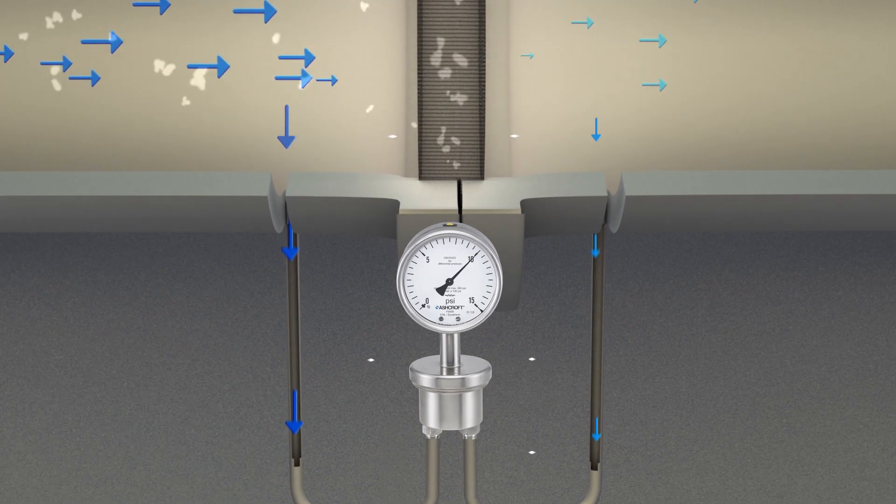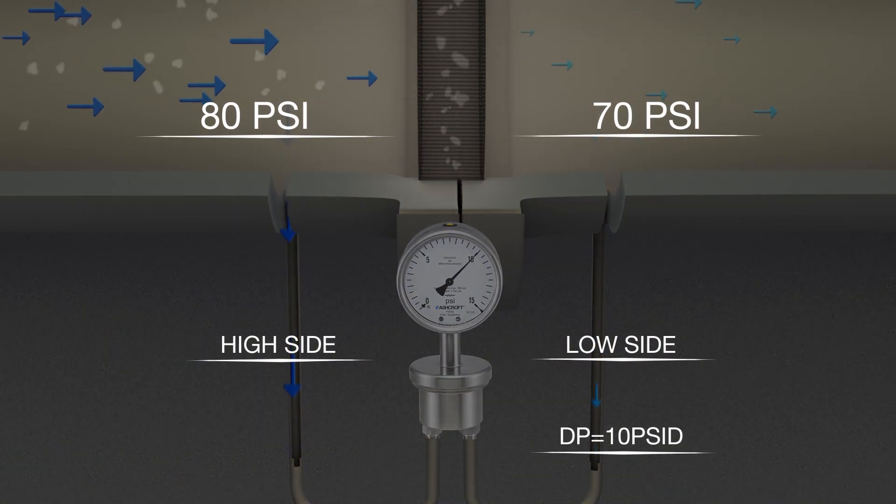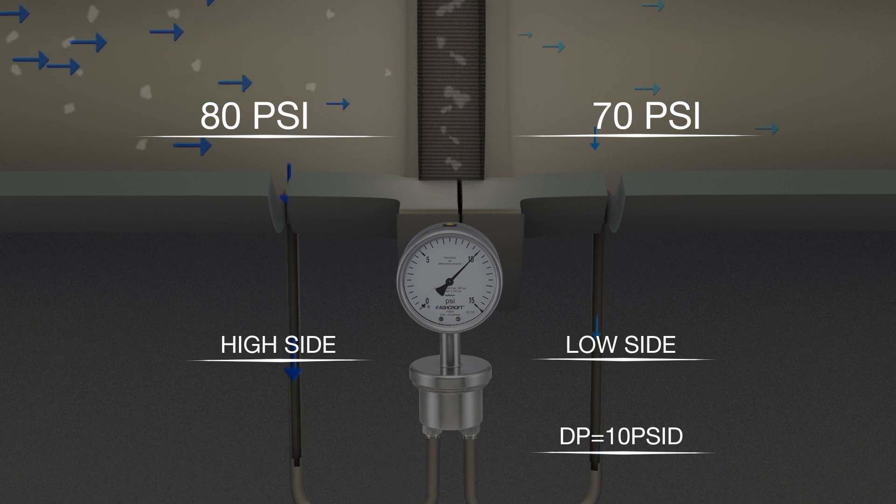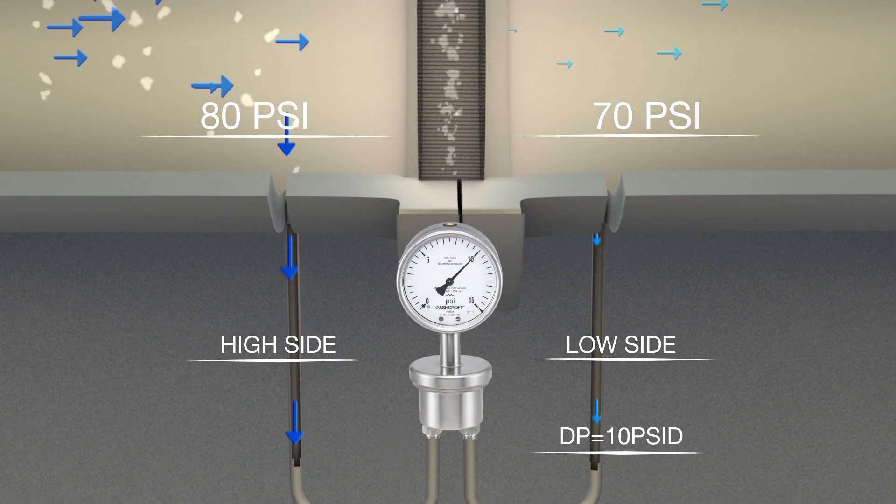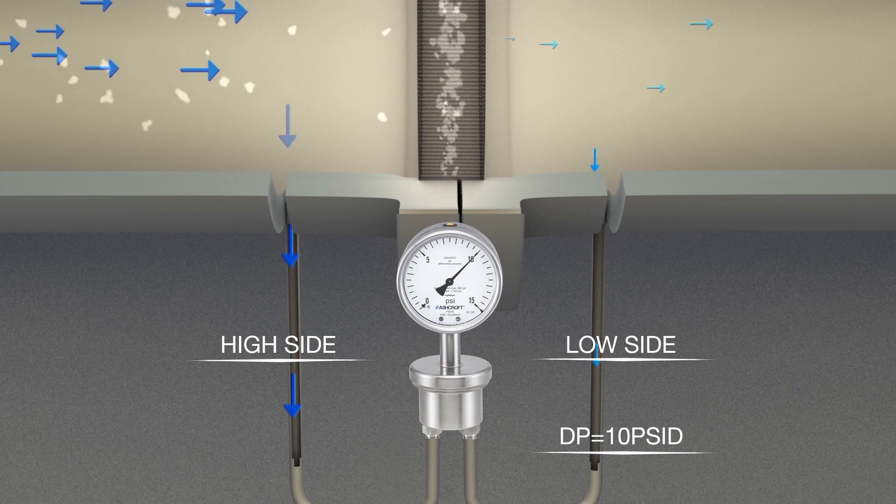The saturation point will be indicated when the delta P value reaches a predetermined threshold. This value is derived from a calculation that factors in the flow rate, fluid viscosity and filter characteristics.